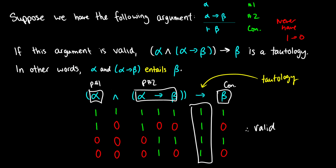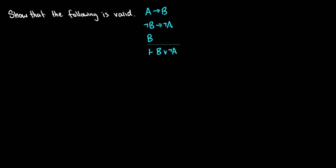As a reminder, how did we get here? We took our argument, put ANDs between all the premises, and put an arrow before the conclusion. Now let's show that the following is valid: A arrow B, not B arrow not A, B — therefore B or not A.